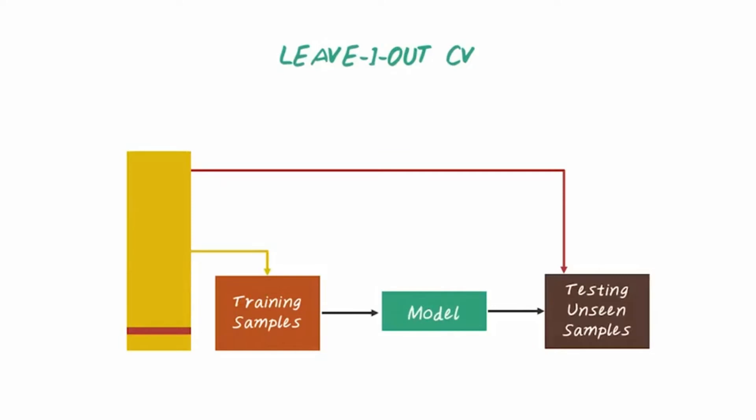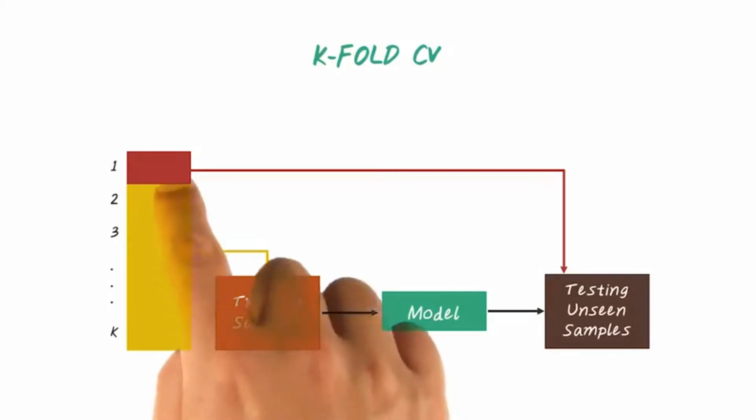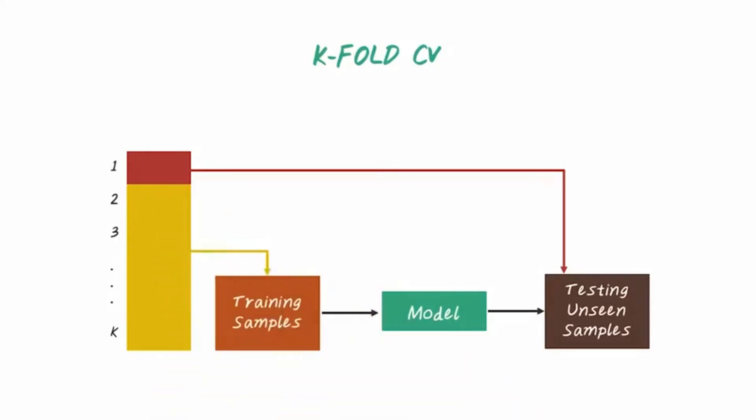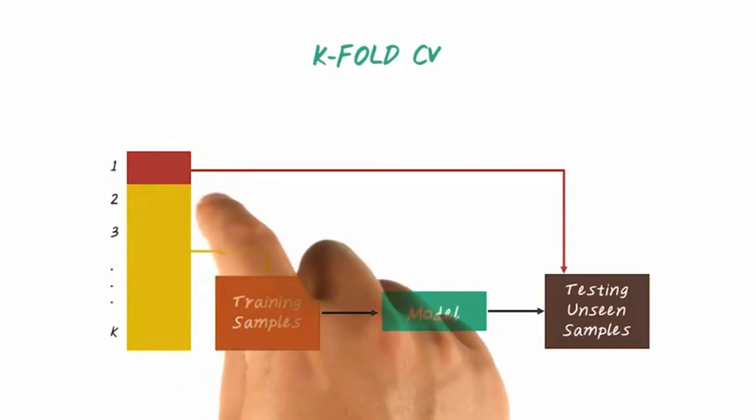K-fold cross-validation is very similar to leave-one-out validation. But instead of just using one example as validation set, we have multiple samples in the validation set. More specifically, we split the entire data set into k-folds. And we iteratively choose each fold as validation set and use the remaining folds as a training set.